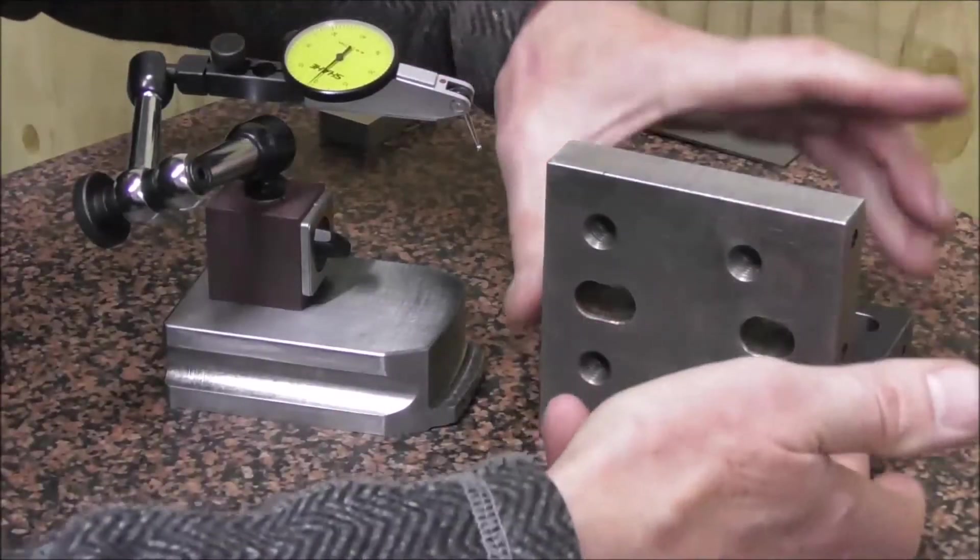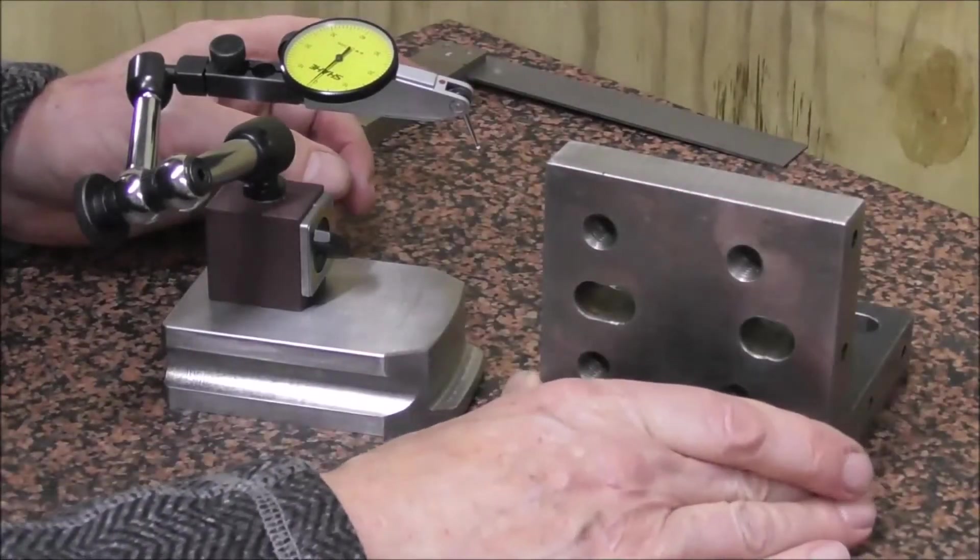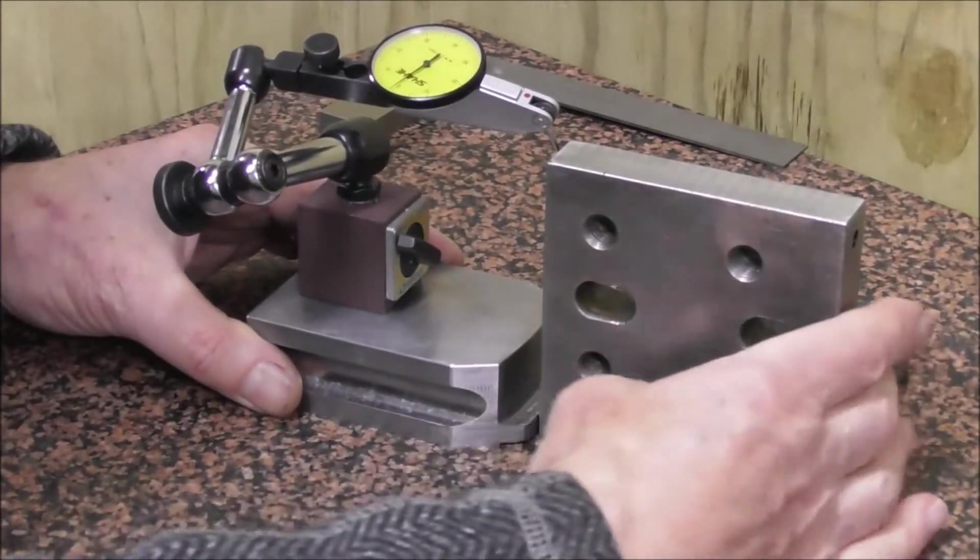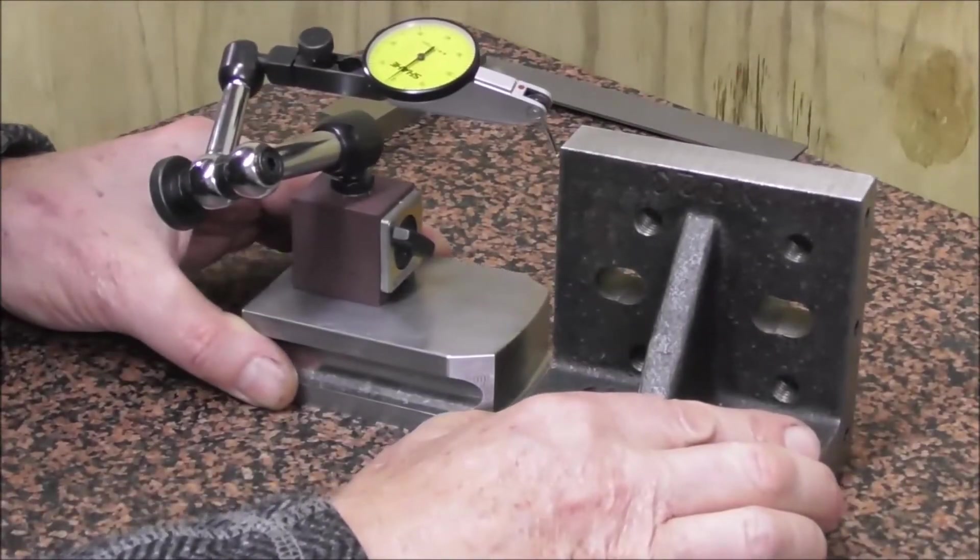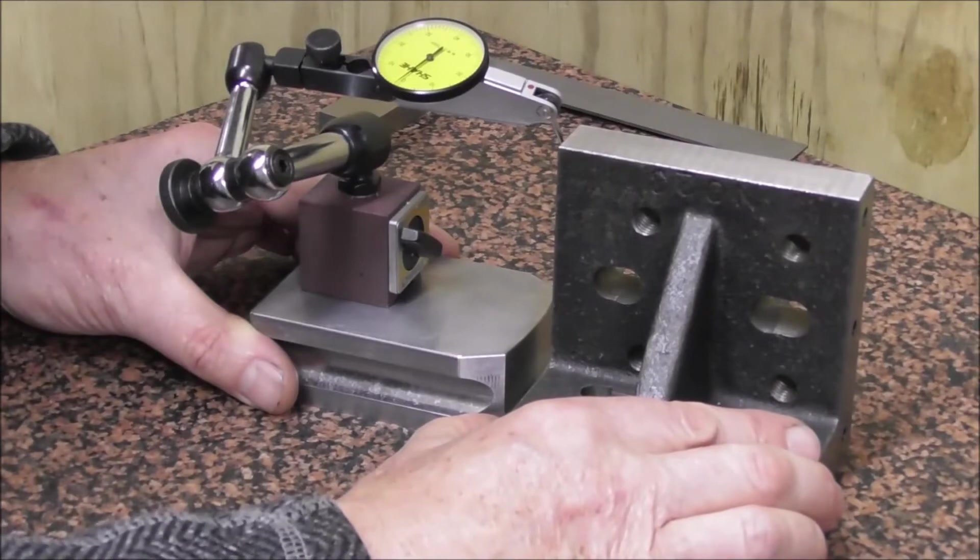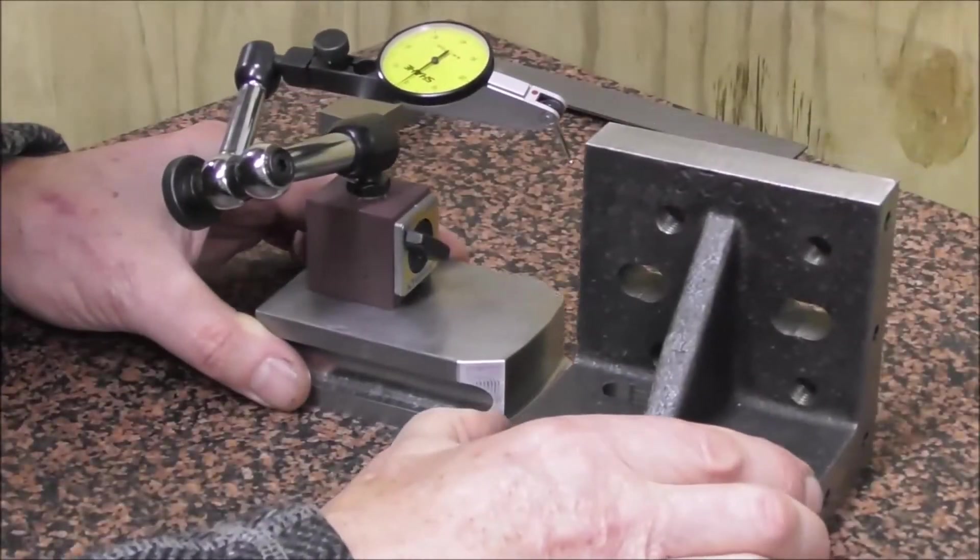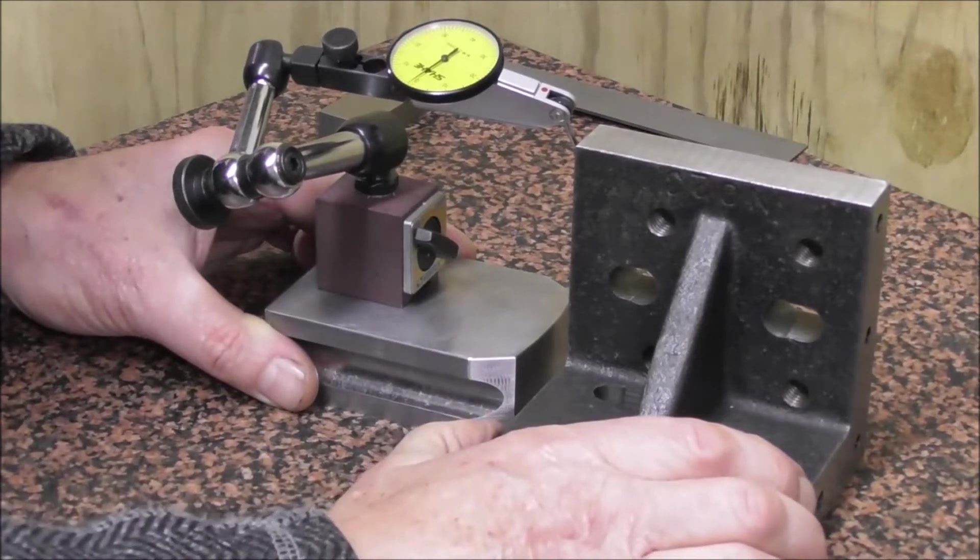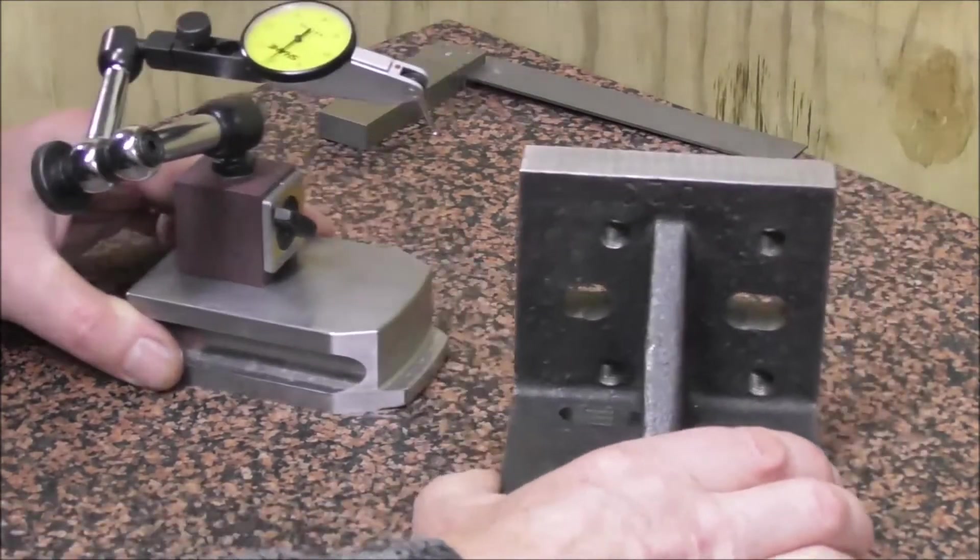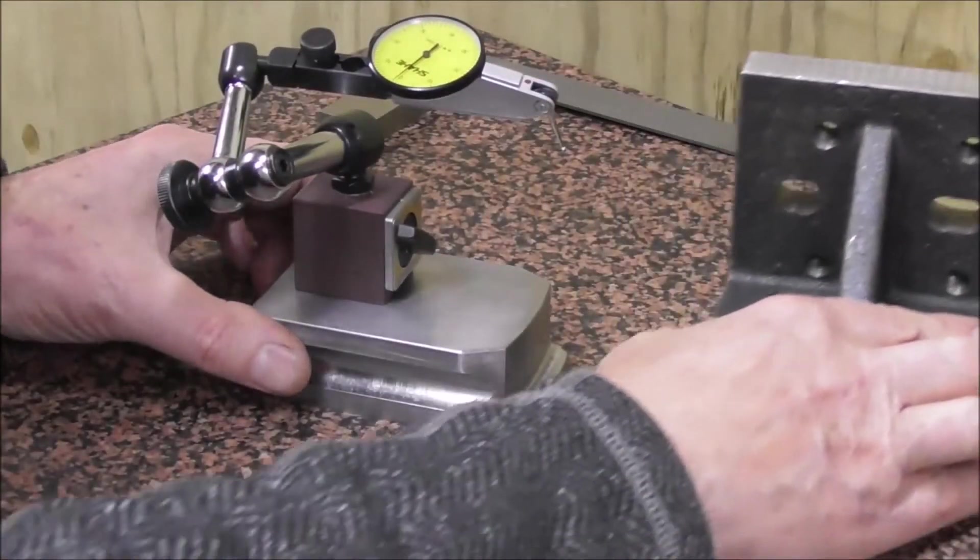If you have two parallel faces, for example on a parallel or on the sides of an angle plate, and you can measure it with a micrometer and ascertain that it is quite accurately parallel, then you can measure one side, turn it round and measure the other side. Knowing that it's parallel must mean that if you get zero or one on both sides, it's exactly 90 degrees. But if it isn't at 90 degrees, you can split the difference and you can set it to 11 on one side and 9 on the other. And that way you know that 10 in the middle is exactly 90 degrees.